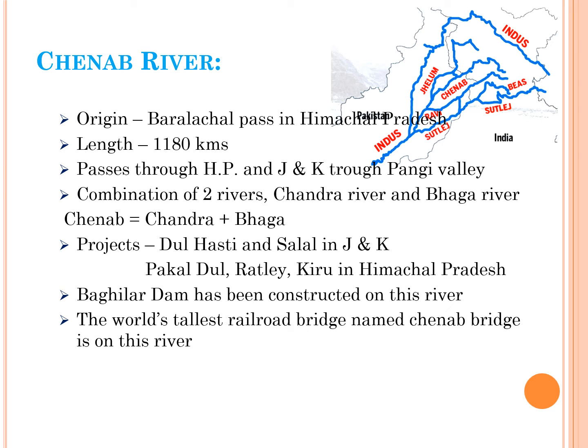Chinab river originated in Baralacha Pass in the state of Himachal Pradesh and is about 1,180 kilometers in length. This river passes through Himachal Pradesh and Jammu and Kashmir through Pangi valley. The Chinab river is a combination of two rivers — Chandra river and Baga river — and is also referred to as Chandra Baga in its upper reaches. Important projects on this river are Dulhasti and Salal in Jammu and Kashmir, and Pakaldul, Ratli and Kiru in Himachal Pradesh.